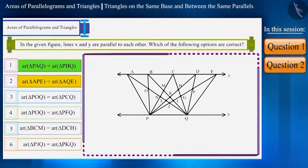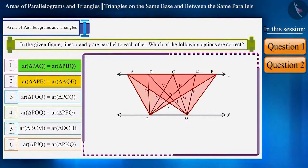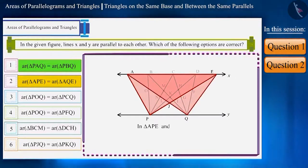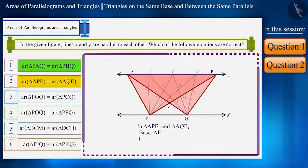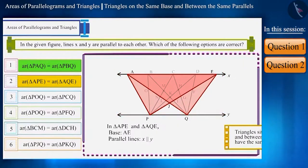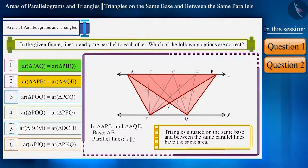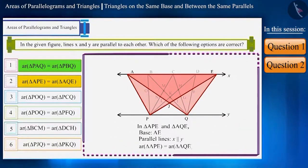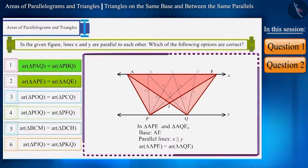For the second option, we will discuss triangle APE and triangle AQE. These two triangles are constructed on the same base AE and they are situated between the same parallel lines X and Y. We know that the areas of triangles on the same base and between the same parallel lines are equal. Therefore, the area of these two triangles will be equal, so the second option is also correct.